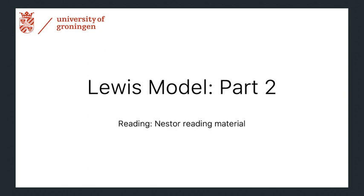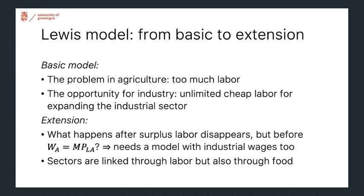Welcome back. Here's part two of the explainer of the Lewis model based on the Nestor reading material. In the first part we covered the basic model, emphasizing how in agriculture there's too much labor and as a result the marginal product of workers is zero — representing an opportunity for the industrial sector because there's an unlimited supply of cheap labor to industrialize.